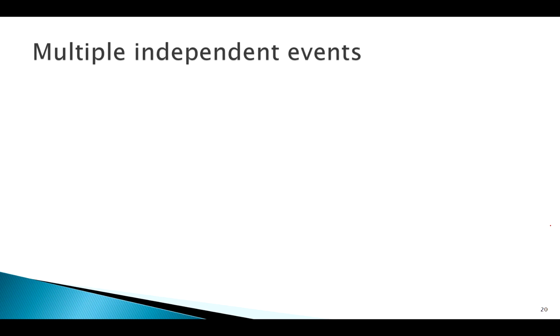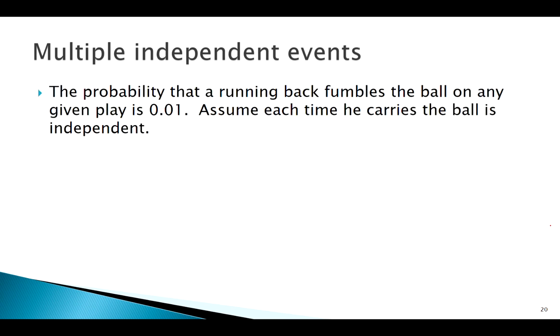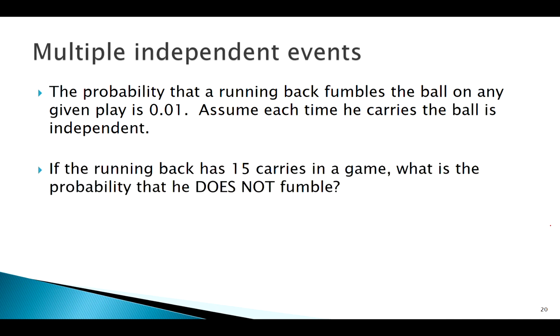What if now we have multiple events but we can assume they're independent? In football, let's say a running back has a 1% chance of fumble, and we can assume each carry he gets is independent. If he gets the ball 15 times in the next game, what's the probability he does not fumble?